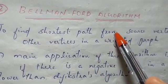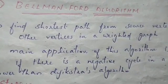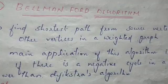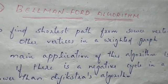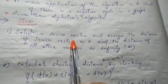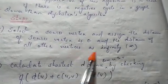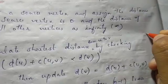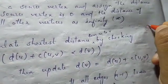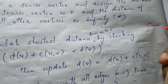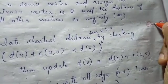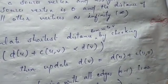Bellman-Ford is slower than Dijkstra's algorithm because there is a negative cycle handling requirement. In Bellman-Ford, we use D of U and C of U, V — the distance to U and the cost of edge U to V.